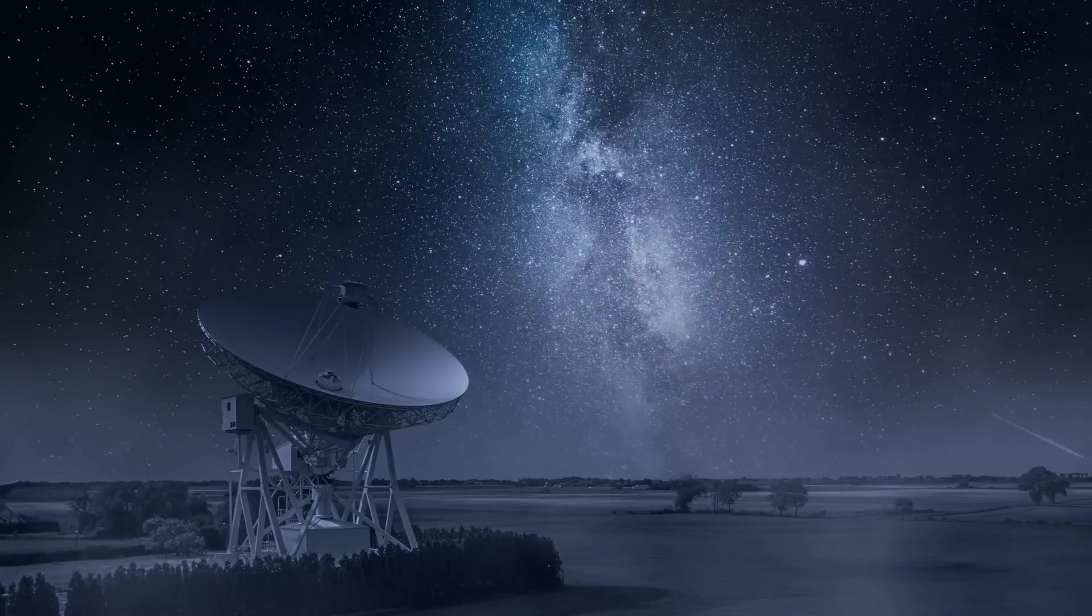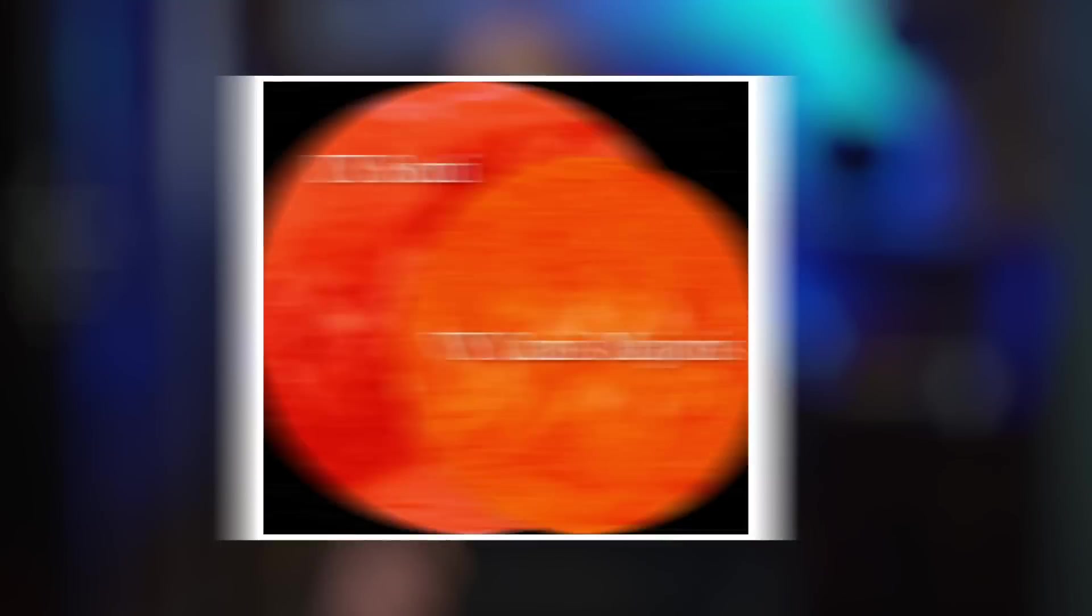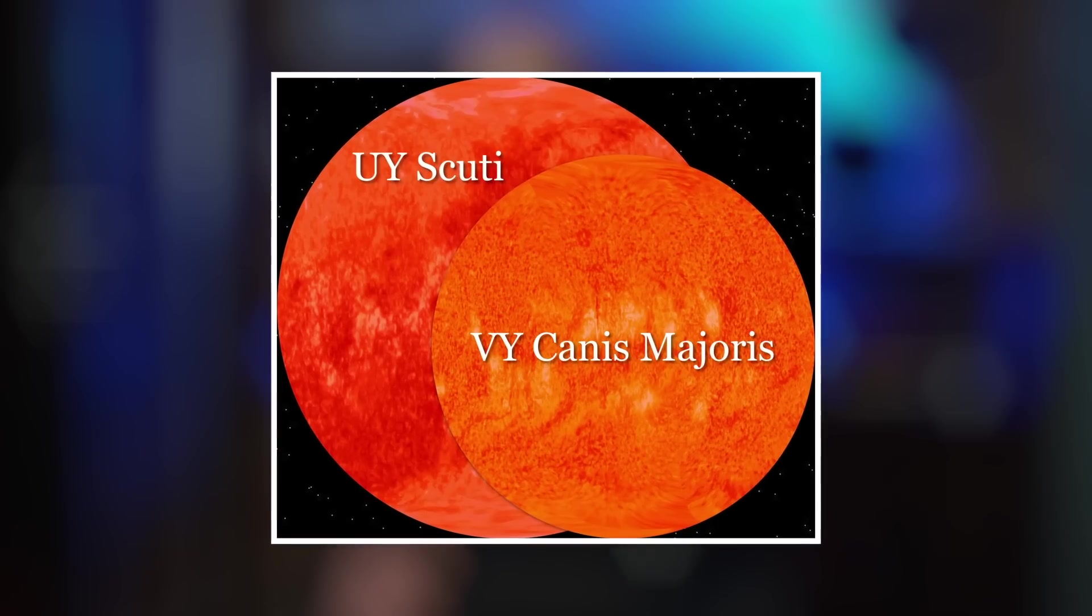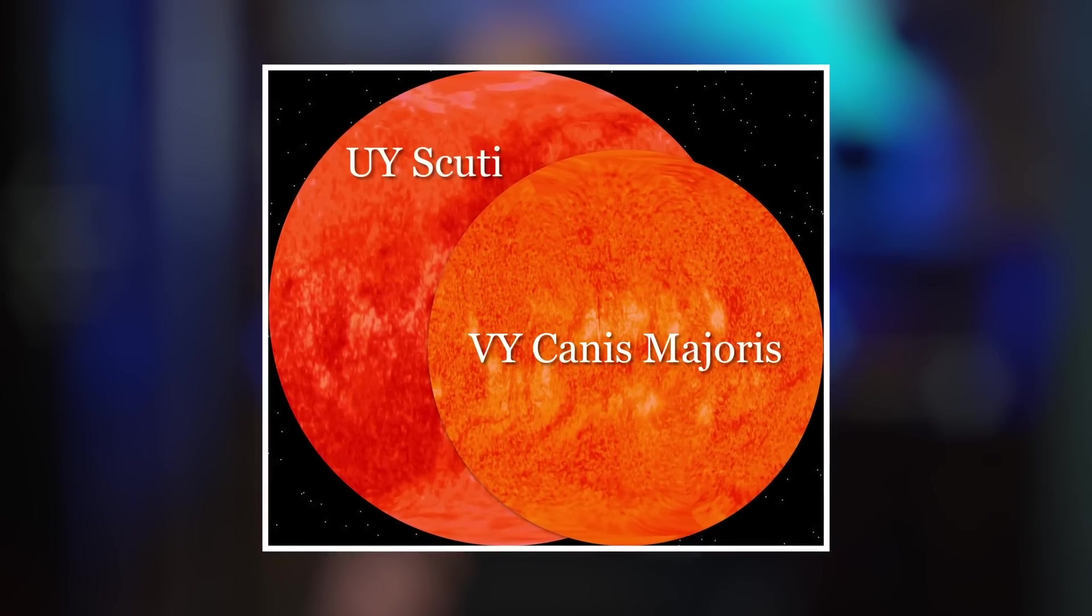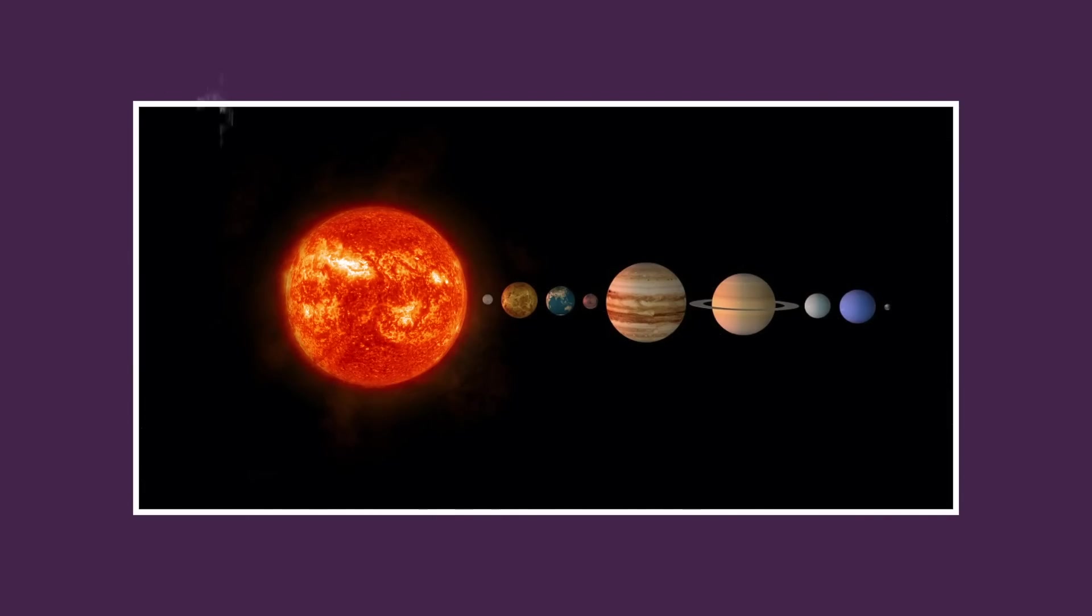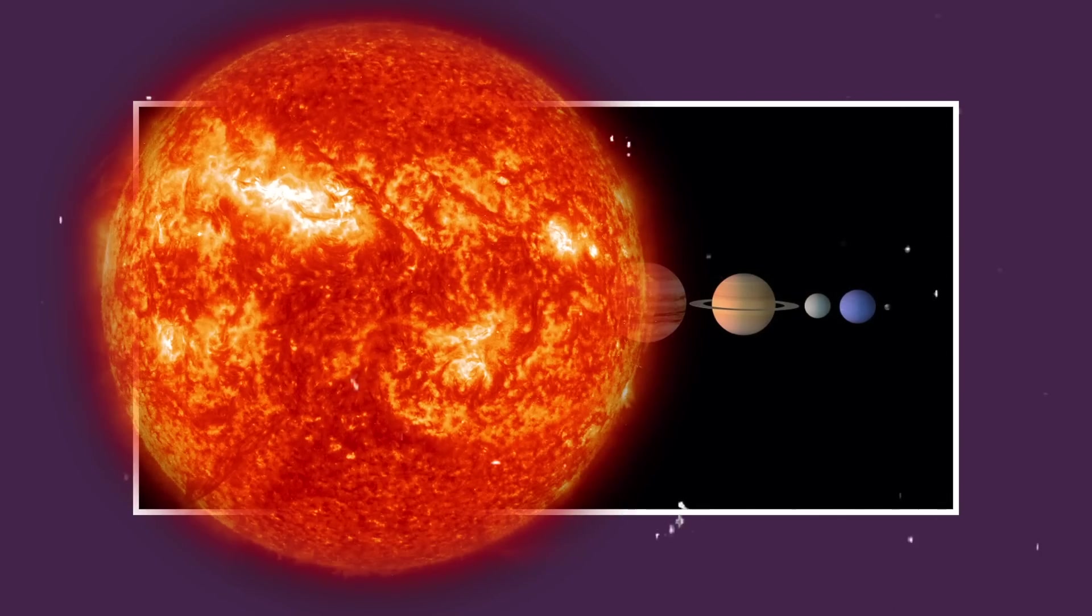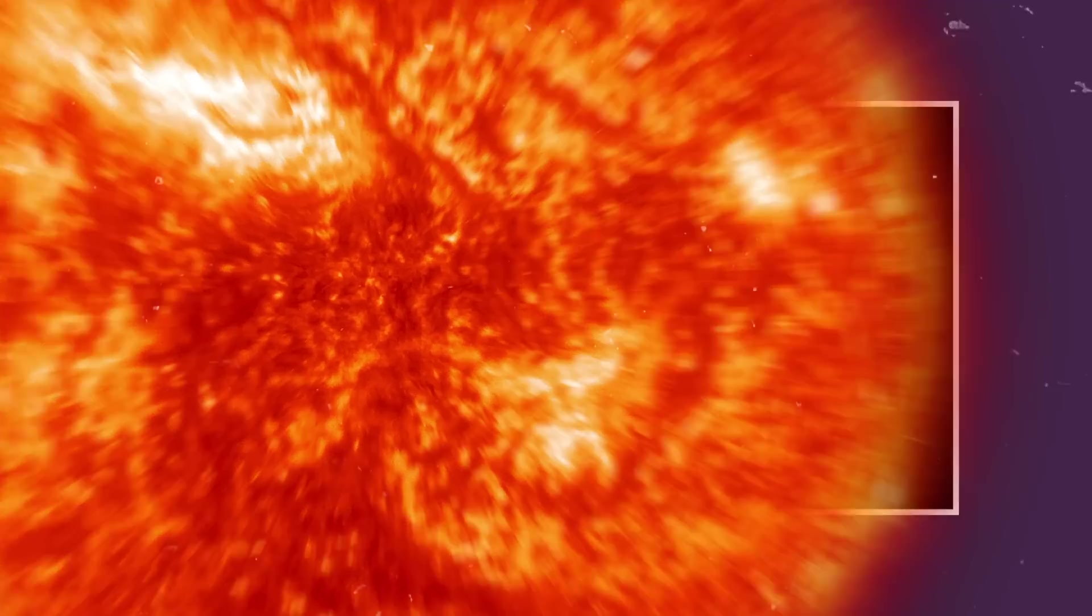It was only when the VLT took a closer look that it was discovered that Scuti actually measures in at roughly 1,708 times the diameter of our sun, which means that it isn't only far greater in size than V.Y. Canis Majoris, but that it smashes the previously cemented Hayashi Limit to bits. For comparison, if UY Scuti was placed at the same point as our own sun, its outer corona would not only engulf Jupiter, but it would also engulf Uranus, Neptune, and even Pluto.